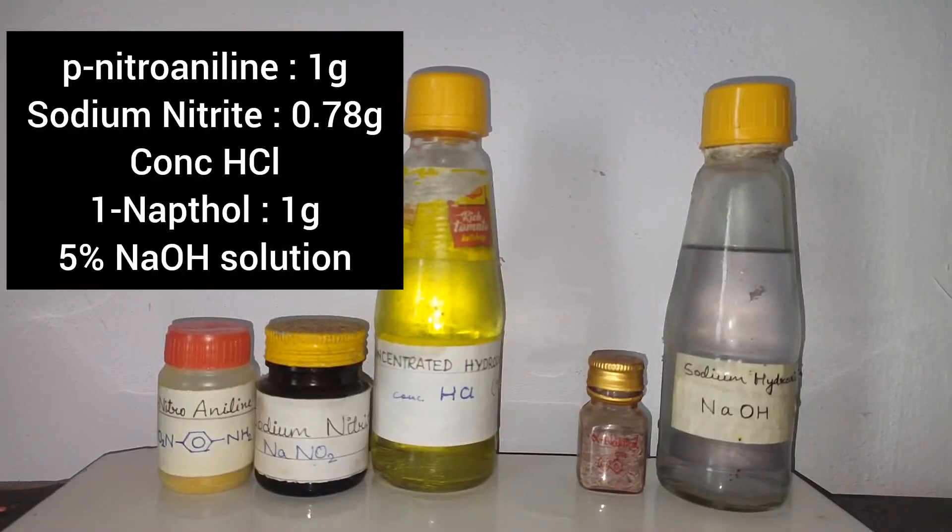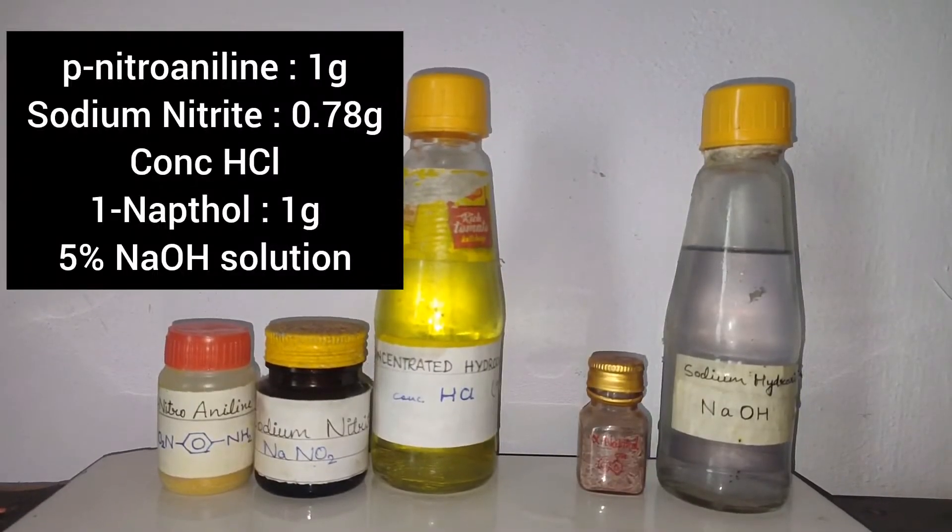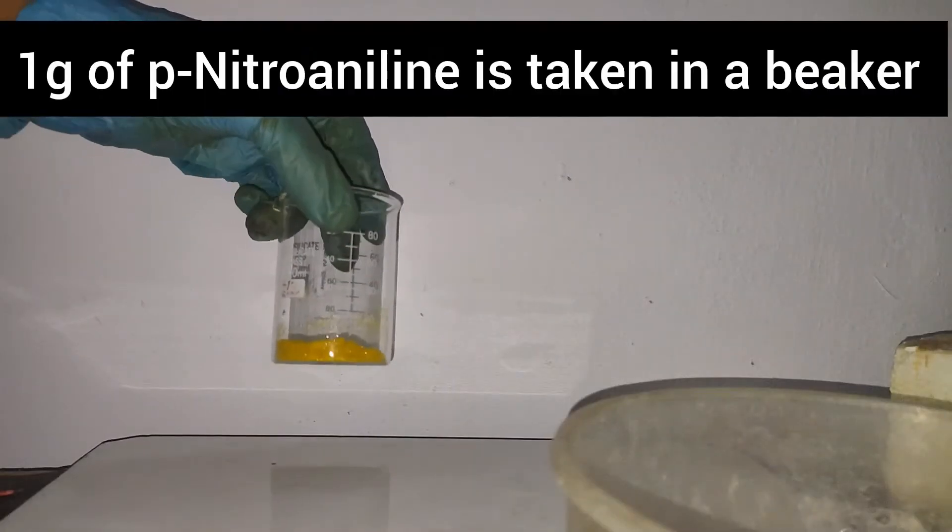In this video we are going to make Magneson 2. For this we need para-nitroaniline, sodium nitrite, concentrated HCl, 1-naphthol, and 5% NaOH solution.